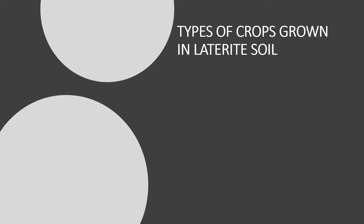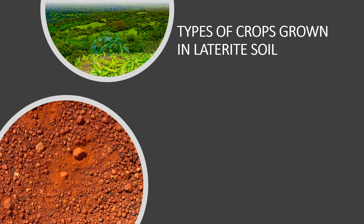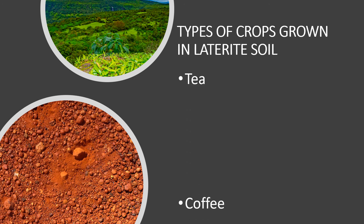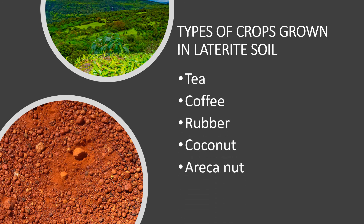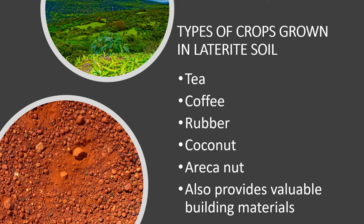Laterite soil is red in color and is found in the western ghats and parts of Tamil Nadu. It is rich in iron and aluminium, and it is good for growing crops such as tea, coffee, rubber, coconut and areca nut. It is also used in providing valuable building materials.